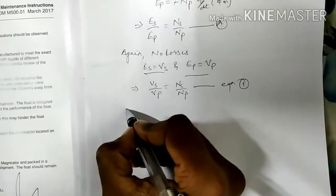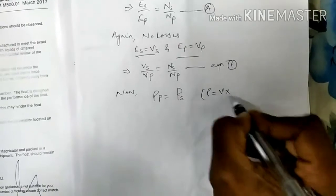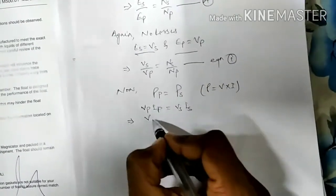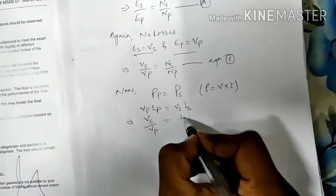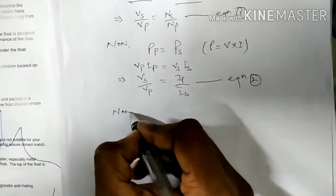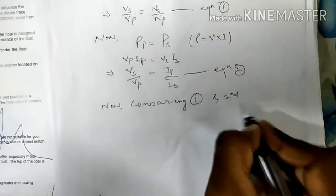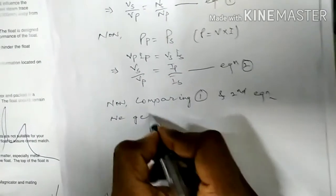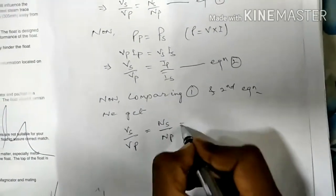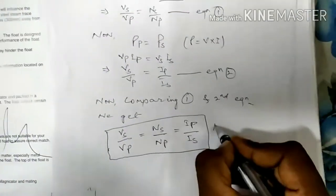We also know that in a transformer, power remains the same, so power in the primary side PP equals power in the secondary side PS. Therefore VP × IP = VS × IS. After rearranging, we get VS/VP = IP/IS — call this Equation 2. Comparing Equation 1 and Equation 2, we arrive at the very important combined relation: VS/VP = NS/NP = IP/IS. This is a very important relation that we have to remember. Thank you.